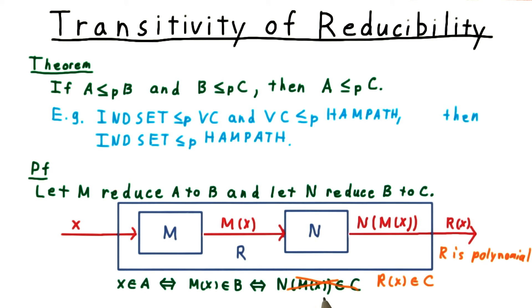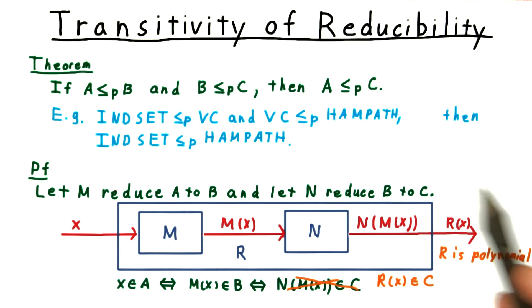The composition of N and M is the reduction R. So overall, we have that X is in A if and only if R is in C, just as we want it.